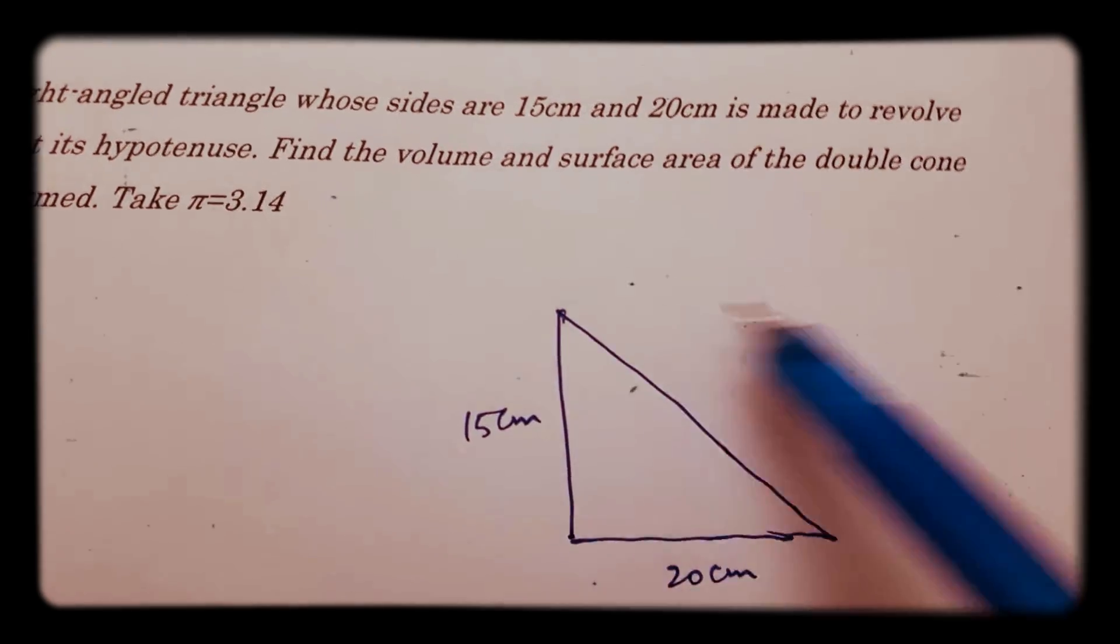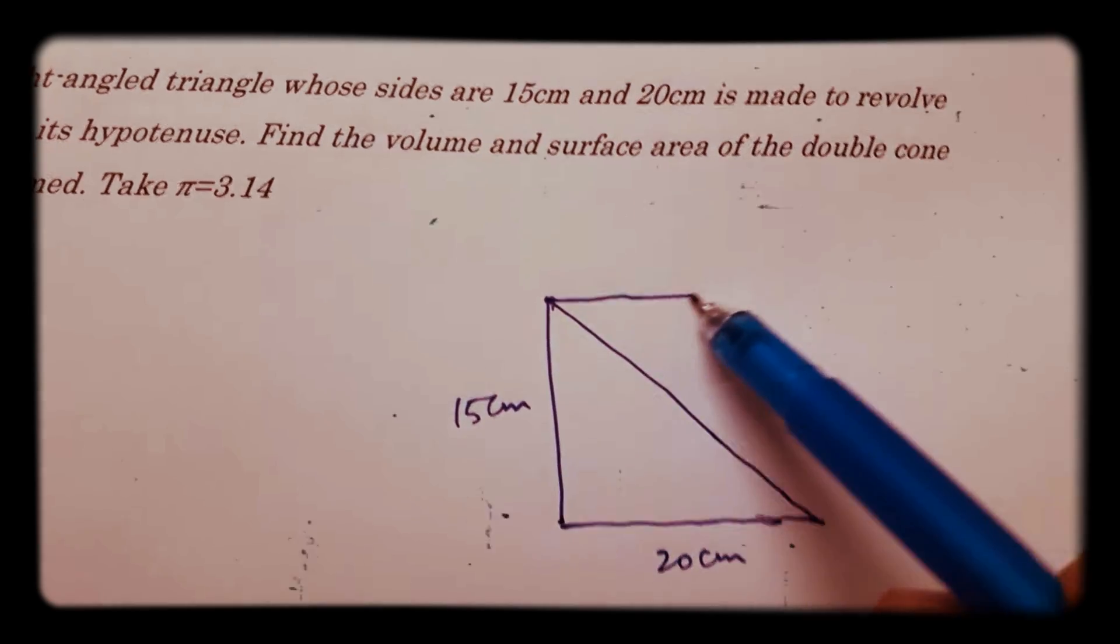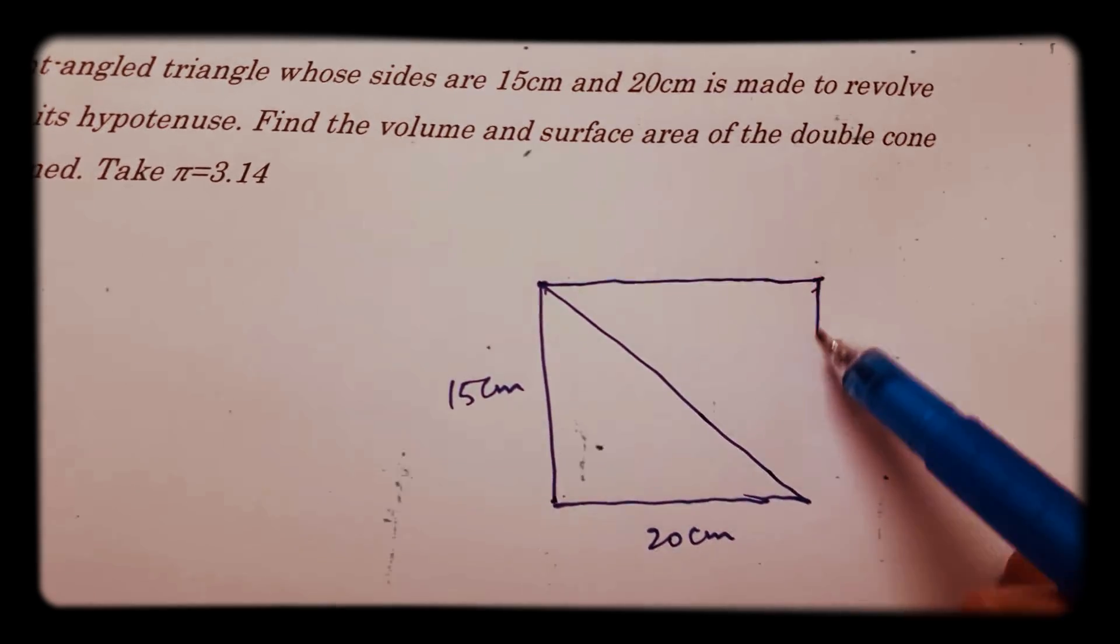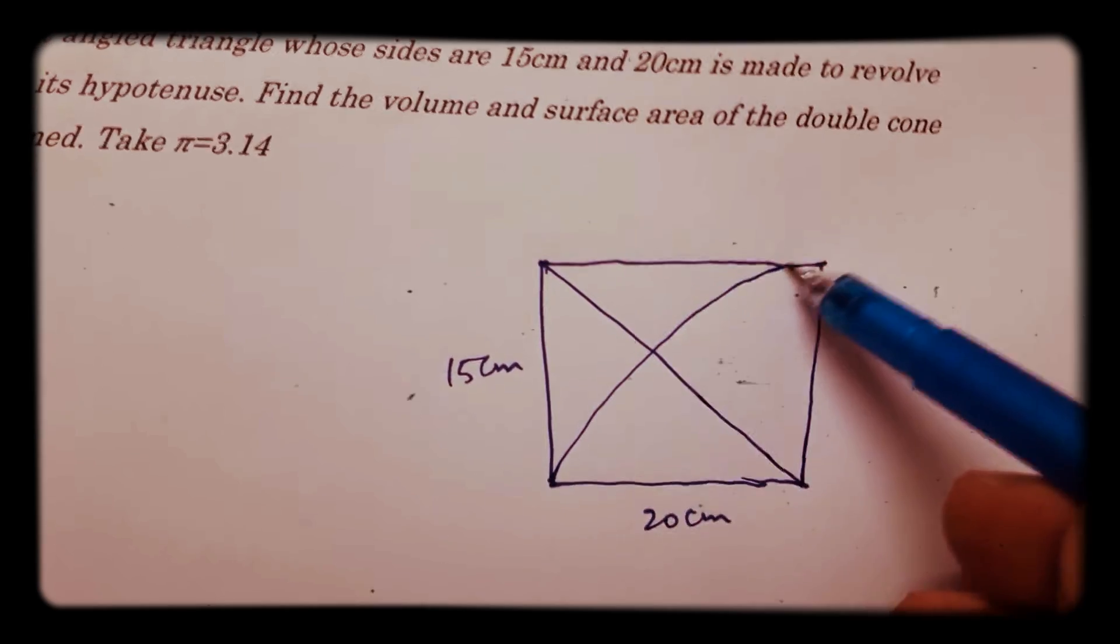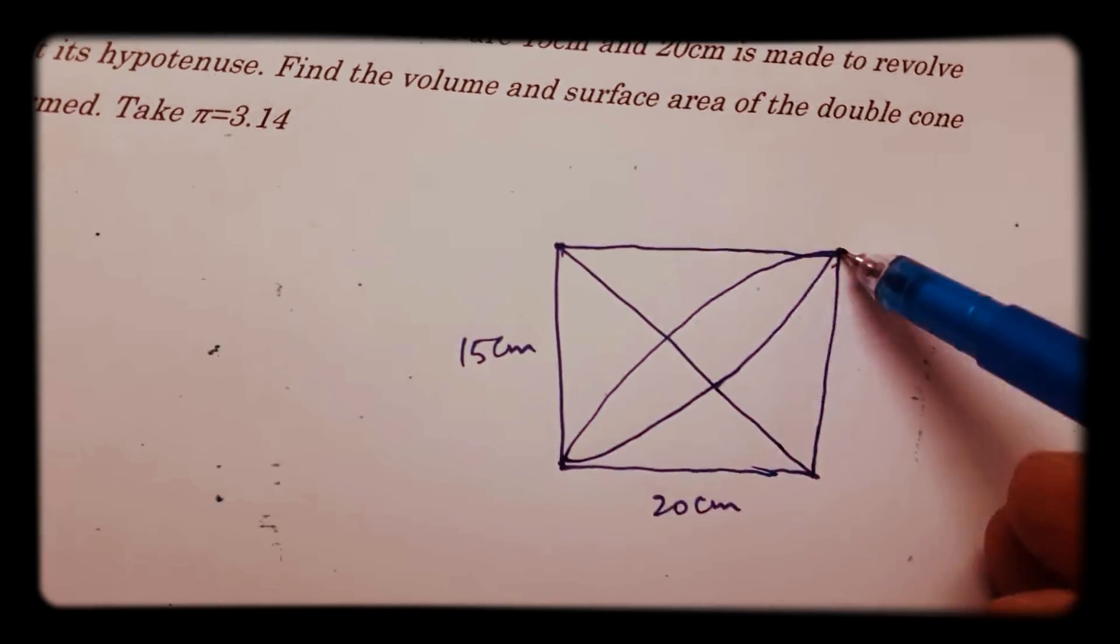Is made to revolve along its hypotenuse. We will get a figure like this, we will get a double cone.